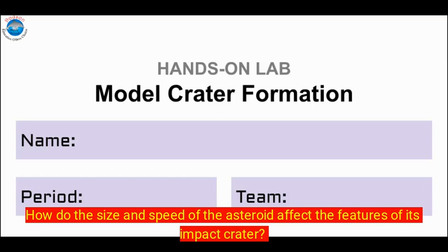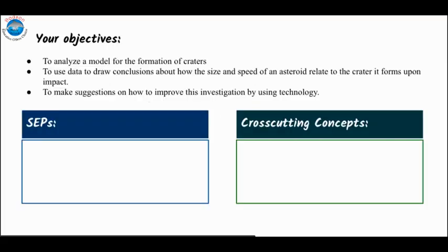So you should have a copy of the Google Slides which you have to complete as you watch this video. I am going to be moving back and forth between the video and the slides just to direct your attention. So at this point you should have already discussed the science and engineering processes and the cross-cutting concepts that are involved in the main objectives of the activity.